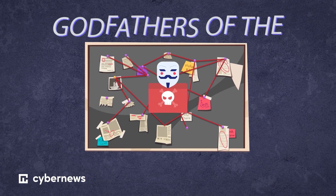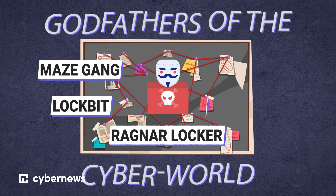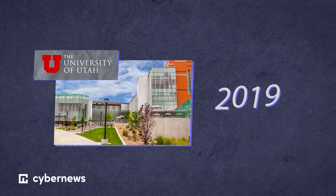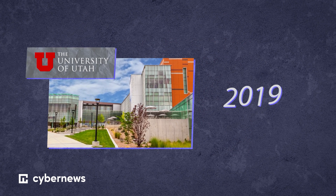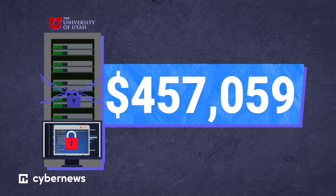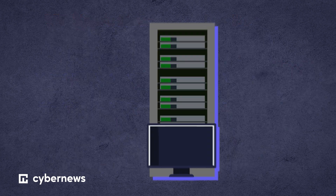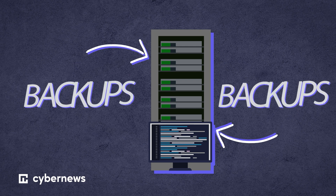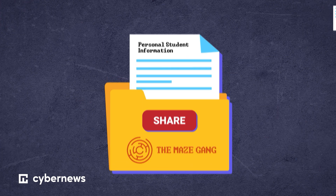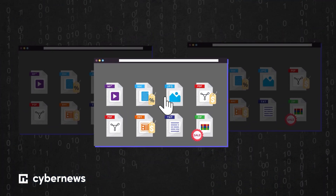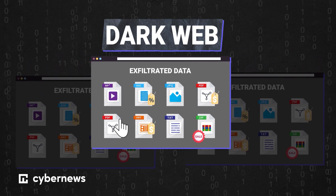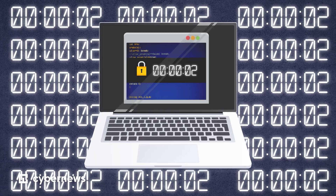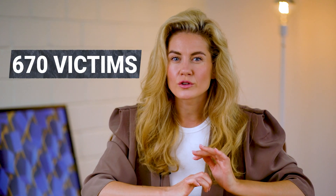To name some of the godfathers of the cyber world: the Maze Gang, LockBit, Ragnar Locker, Conti, and SunCrypt. In late 2019, the Maze Cartel attacked the University of Utah, which led to the university being forced to pay a $457,000 ransom — despite the fact they had restored their data from backups. Maze was still threatening to leak exfiltrated personal student information. Some ransomware operators advertise exfiltrated data from a company on the dark web, especially if they haven't received payment within a specific window. The most aggressive gangs have anywhere up from 670 victims on their list, and still growing.